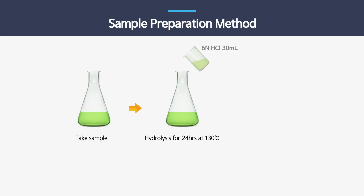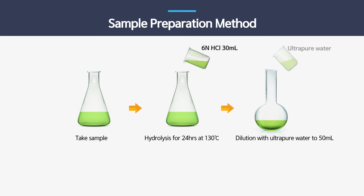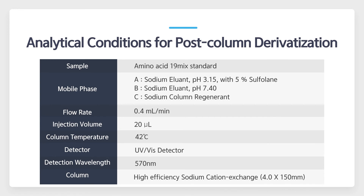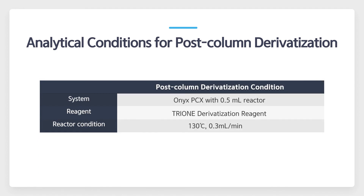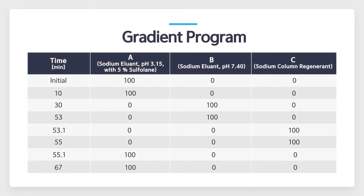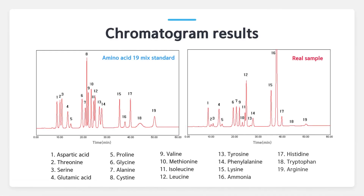Prepare the sample referring to the following process. Set the analytical conditions for both HPLC and post-column derivatization system, and the gradient program as well. Then, you'll get the chromatogram results like these.